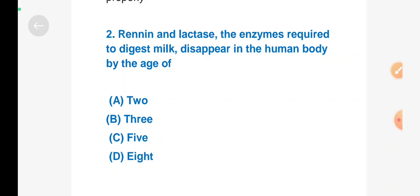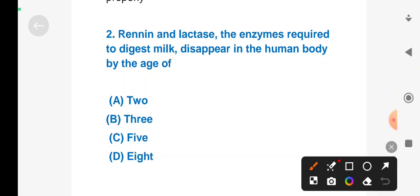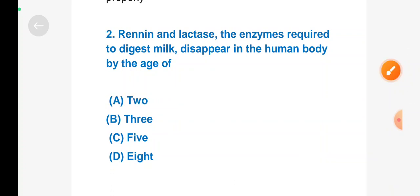Next question: renin and lactase, the enzymes required to digest milk, disappear in the human body by the age of how many years? Option A: 2, Option B: 3, Option C: 5, Option D: 8. Right answer is Option A, 2 years.